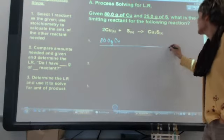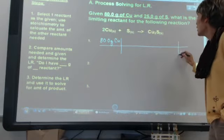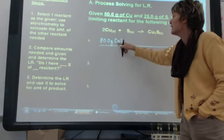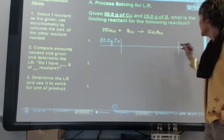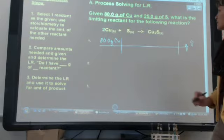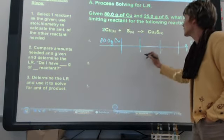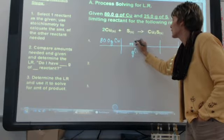And it says use that reactant to determine how much sulfur we need. So this is a mass-mass problem. I know I have 80 grams of copper and I want to determine how many grams of sulfur I am going to need. So I am going to use three ratios here and go from grams of copper to moles of copper.